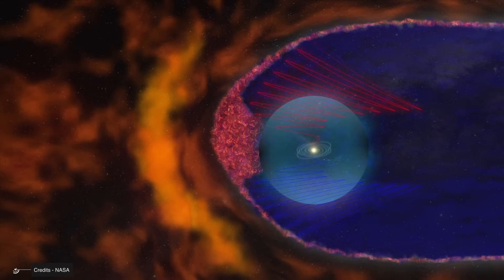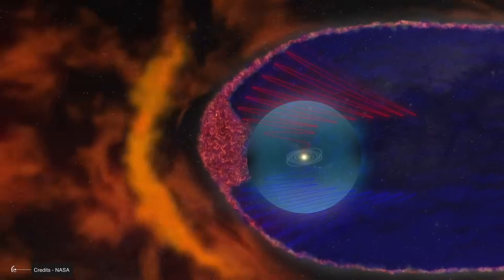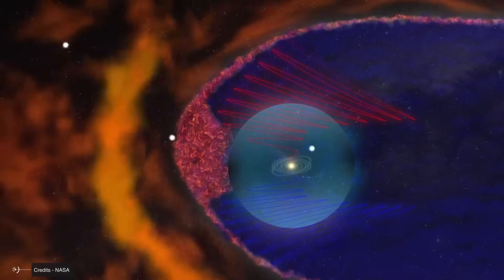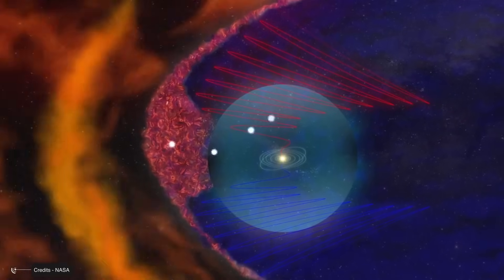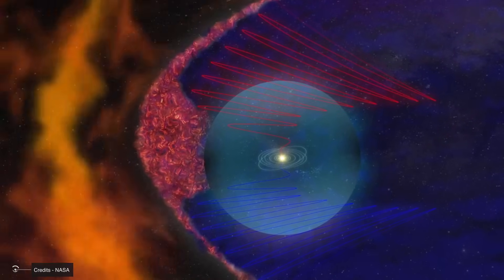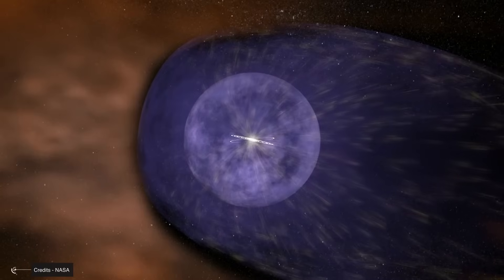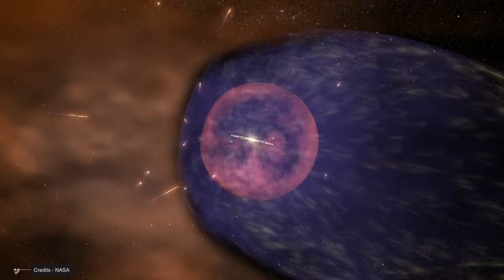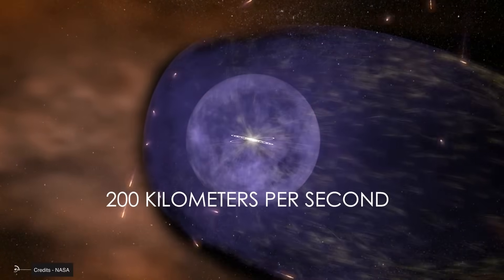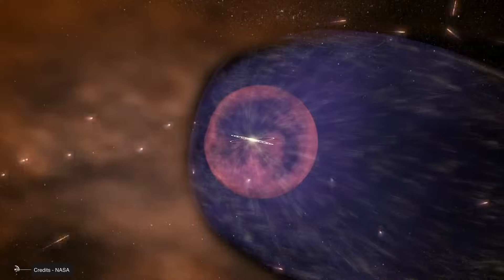The heliopause, where our solar system's influence ends and interstellar space begins, isn't a perfect sphere but a constantly shifting boundary responding to both solar activity and our movement through the galaxy. This dynamic interaction creates a complex structure that bears no resemblance whatsoever to the neat, orderly system depicted in conventional models. The heliosphere's shape is distorted because our entire solar system is hurtling through the galaxy at approximately 200 kilometers per second, another crucial fact rarely emphasized in traditional astronomy education.